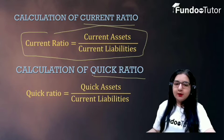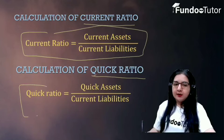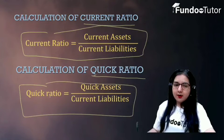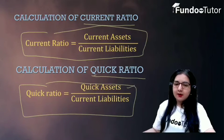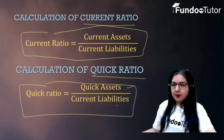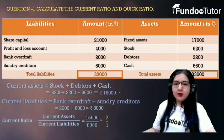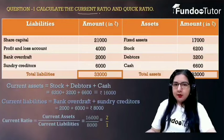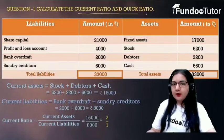To calculate quick ratio, you need to apply this formula: quick ratio is equal to quick assets divided by current liabilities. Now let's have a look at the question. We need to calculate the current ratio and quick ratio.